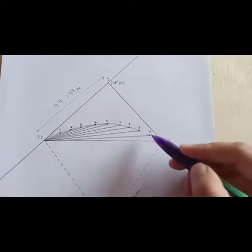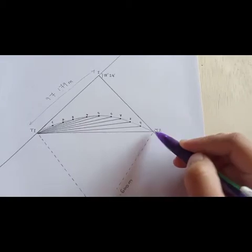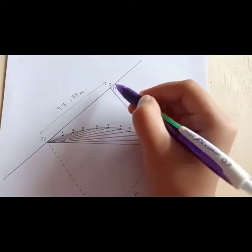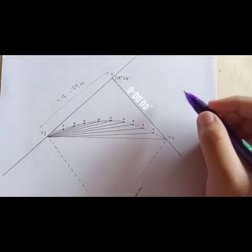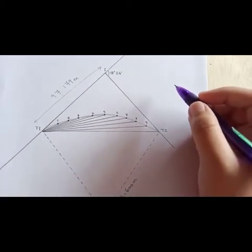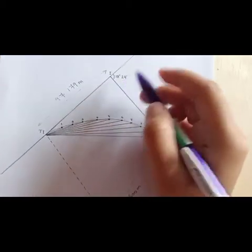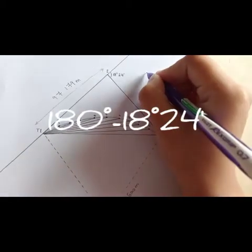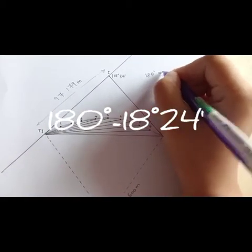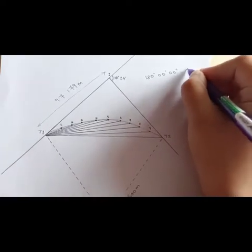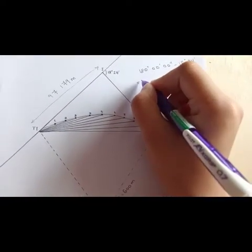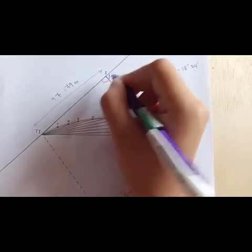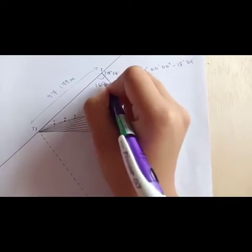Next, to find the T2, you need to move the total station to point I and also clear. Then, subtract the bearing I, which is 180 degree, with 18 degree, 24 minute. You're gonna get 161 degree, 36 minute.